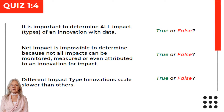Question: it is important to determine all impact with data. True — validate and evaluate impact with financial, non-financial, sustainability data, and norms appealing to investors, supply chain partners, employees, etc. Question: net impact is impossible to determine because not all impacts can be monitored, measured, or even attributed to an innovation for impact. Yes, but companies and capital markets always select data based on experience and expectation, insights, and data suppliers. Investigation of risks and impact types is crucial. Question: different impact type innovations scale slower than others. Maybe — do-no-harm investing has been around for centuries. Investing for positive impact, such as community development and green bonds, was only introduced a little over a decade ago, but grows and evolves fast.